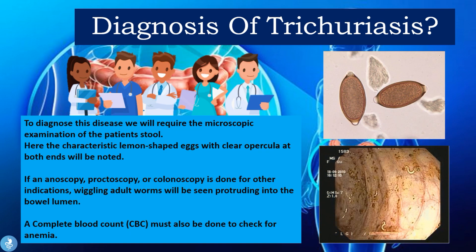To diagnose trichuriasis, we require microscopic examination of the patient's stool, where the characteristic lemon-shaped eggs with clear operculars at both ends will be noted. If anoscopy, proctoscopy, or colonoscopy is done for any other indications, the wiggling adult worms can be seen protruding into the bowel lumen. A complete blood count must also be done to check for anemia, since severe anemia — especially in children — is one of the main signs of the disease.